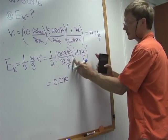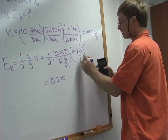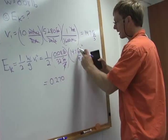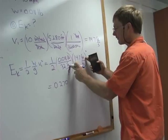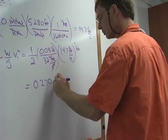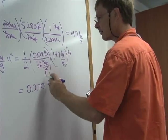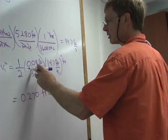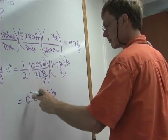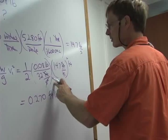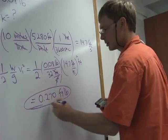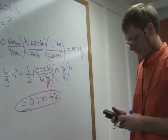I've got feet squared over second squared — because this whole thing is squared — so one over second squared divided by one over second squared cancels out. I've got feet squared here and feet here, so I have one foot left. That gives foot-pounds, which is energy. So that's the kinetic energy: 0.270 foot-pounds.